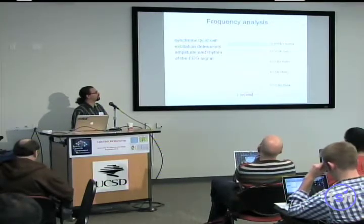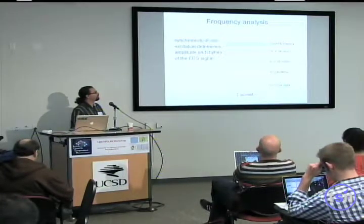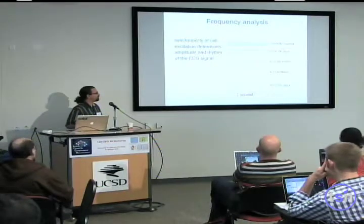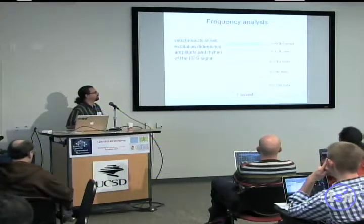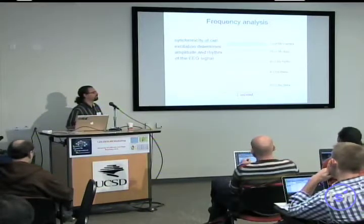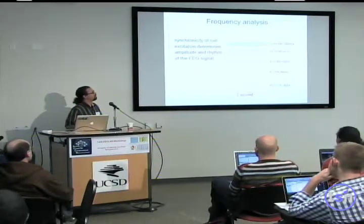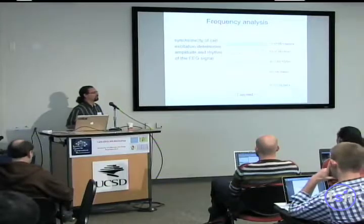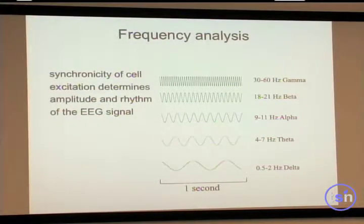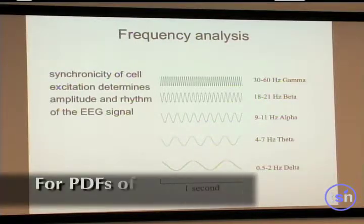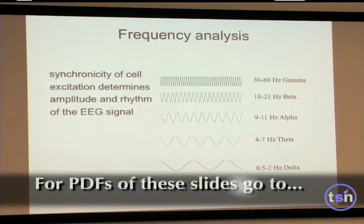This is how brainwave EEG frequencies are usually defined. You have very low frequencies, 0.5 to 2 Hz called Delta, 4 to 7 Hz called Theta, 9 to 11 Hz called Alpha, and you have low alpha and high alpha. Beta is 18 to 21 Hz and it depends on the authors. Usually if you write a paper it's better to state the exact frequency range you mean because different authors mean different things.